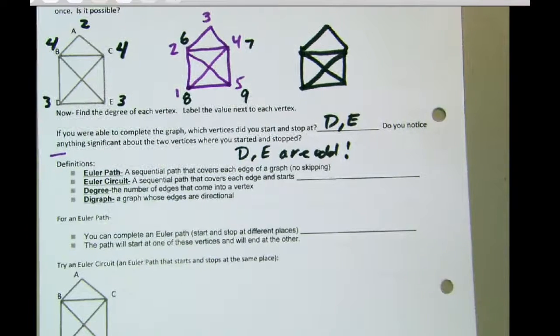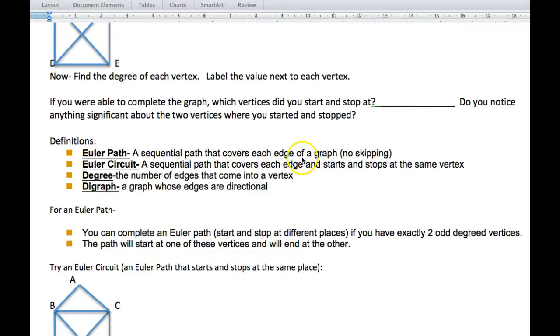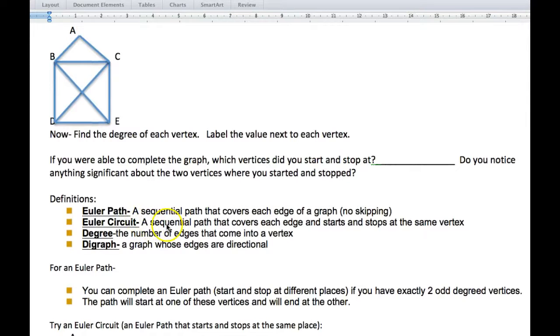Okay, so now let's get into some definitions. Euler path. A sequential path that covers each edge of the graph. No skipping. And so, that's what we just did. We started and stopped at different places, and so that would be more of a path than a circuit. Now, with an Euler circuit, that means that we cover each edge, and then we start and stop at the same vertex. So, that's kind of the difference between the circuit and the path. The degree is the number of edges that come into a vertex, or you could say going out. Just how many edges are there? A digraph is a directional graph. That's where we're going to have arrows on each one of these edges. We'll show you that later.